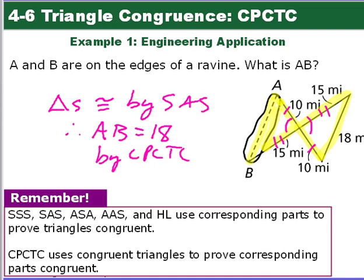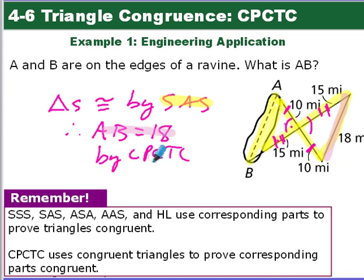Looking at the two triangles, these angles are congruent because they're vertical angles. We have a side of 10 and a side of 10, and also a side of 15 and a side of 15 that are congruent. So by Side-Angle-Side theorem, the triangles are congruent. Because of that, the length of AB has to equal this corresponding side, which means AB is 18 — using corresponding parts of congruent triangles are congruent.